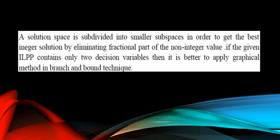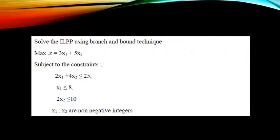In simple terms, the solution space is subdivided into smaller sub-spaces in order to get the best integer optimal solution by eliminating the fractional part of the non-integer value. If the given integer linear programming problem contains only two decision variables, it is better to apply the graphical method in branch and bound. Let me solve the following integer linear programming problem: maximize Z equal to 3x1 plus 5x2, subject to 3x1 plus 4x2 ≤ 25, x1 ≤ 8, 2x2 ≤ 10, and x1, x2 are non-negative integers.